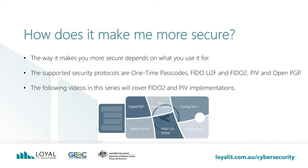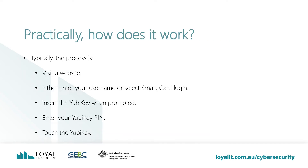YubiKey's implementation of these protocols have been tested and verified by independent third parties. It creates two-factor authentication for any login. It requires something you know — your PIN — and something you have — your YubiKey. But practically, how does it work? Typically the login process is: visit a website, enter either your username or select SmartCard Login, insert the YubiKey when prompted, enter your YubiKey PIN, and touch the YubiKey. Touching the YubiKey tells the system that there is a human there — it's not a fingerprint reader. This prevents malware masquerading as your key, which is a smart inclusion to increase security. Notice we didn't enter a password, just a PIN.